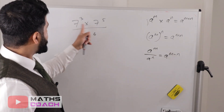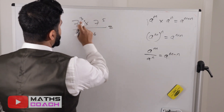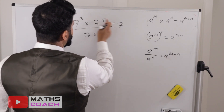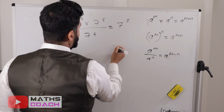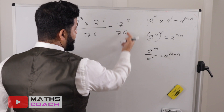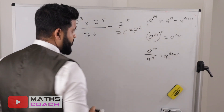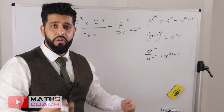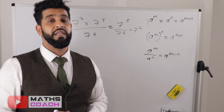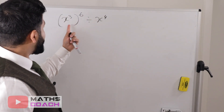Now to warm you up, let's start with this one. First we deal with the top: 7 to the power of 3 and 7 to the power of 5 — add the two powers, giving 7 to the power of 8. Then we have 7 to the power of 6 on the bottom. With division you take away the powers: 8 minus 6 gives 7 squared. We'll leave the answer in index form — 7 to the power of 2 — rather than writing 49.